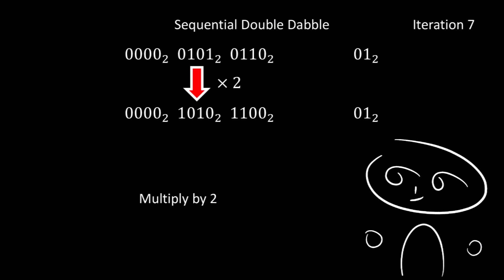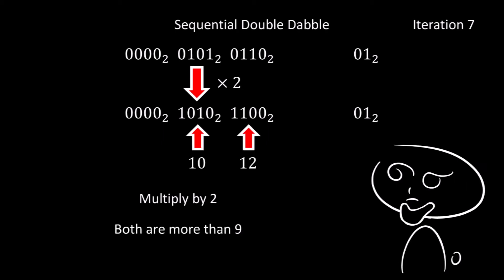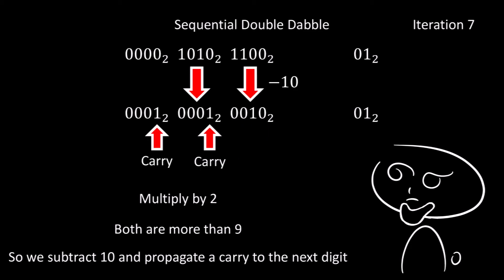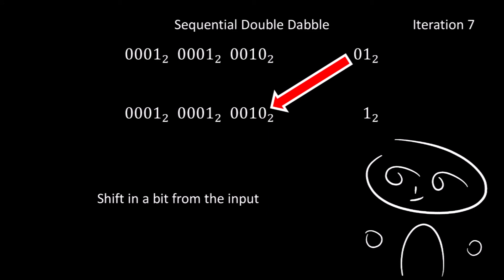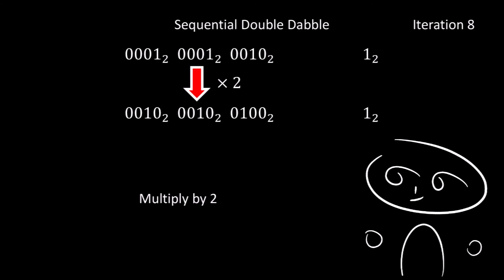For the seventh iteration, the 5 goes to 10, and the 6 goes to 12. Now since both of these values are more than 9, we must subtract 10 from both of them and propagate a carry to the next digit. So the 10 turns into 0, and the 12 turns into 2. Then we propagate a carry from the lowest digit to the second digit, turning the 0 into a 1. And we propagate a carry from the second digit to the third digit, so that third digit then becomes a 1. Then finally, we shift in another bit from the input, and again it's a 0, so the 2 remains as a 2.